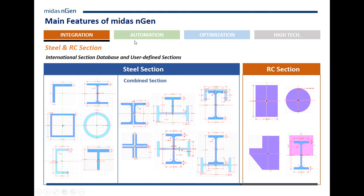The program also has a large database for steel sections, organized by code or region. You can do combined sections as well. As we'll see in the demo, you can select from a long list, get the drawing itself, and then modify it once selected — which is also good for RC sections. You can select general shapes, and once you have them in the platform, you can modify and integrate them. The program is very versatile and allows you to work with irregular sections with virtually no limit.